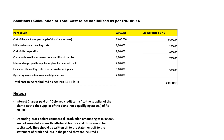Estimated dismantling cost to be incurred after 7 years — yes, this is related, so we include 3 lakhs. Operating losses before commercial production of 4 lakhs — operating costs are not considered for capitalization as per Indian Accounting Standard 16, so we will ignore this and mention it in our working note.